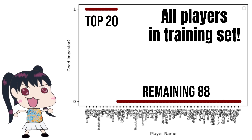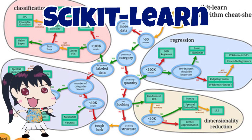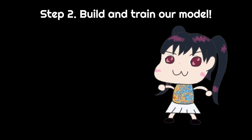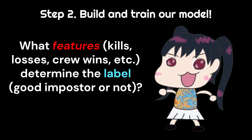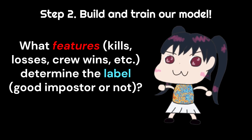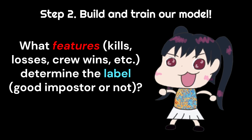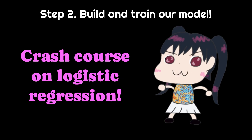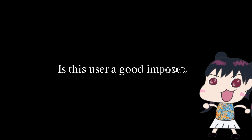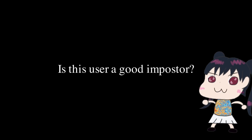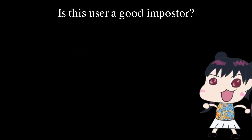You can explore more machine learning algorithms in scikit-learn or try your own. A logistic regression model measures how much each feature of the training data impacts the label — whether a user is a good imposter or not. Before we dive into building and training our model, let's take a quick crash course on how it works. A logistic regression model takes in several features to show how much each feature impacts the final decision.